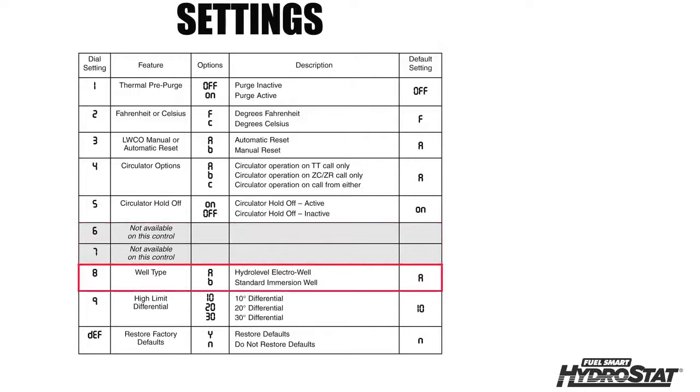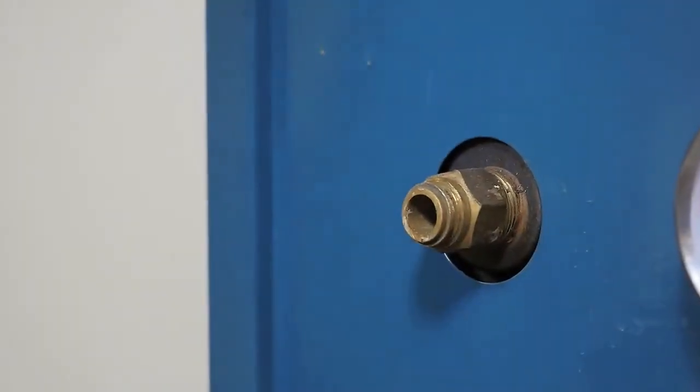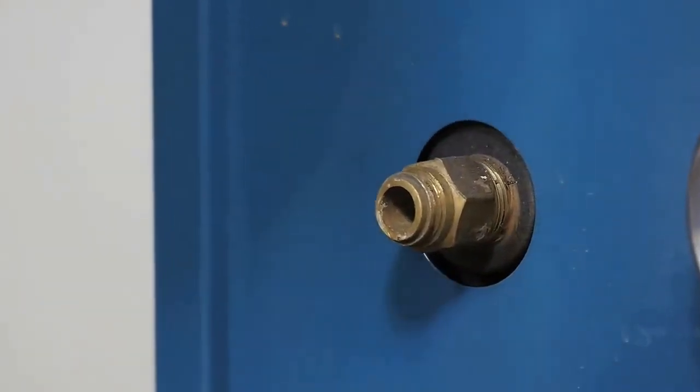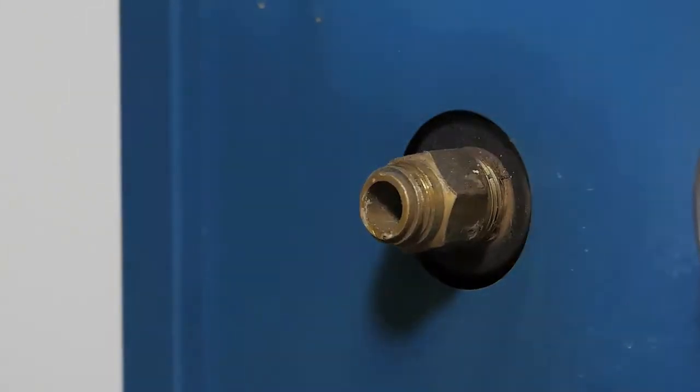Option eight is for setting the immersion well type. While the control is designed to automatically determine the well type, this optional feature can be useful when installing on a standard immersion well that contains hardened heat transfer grease or other contaminants.